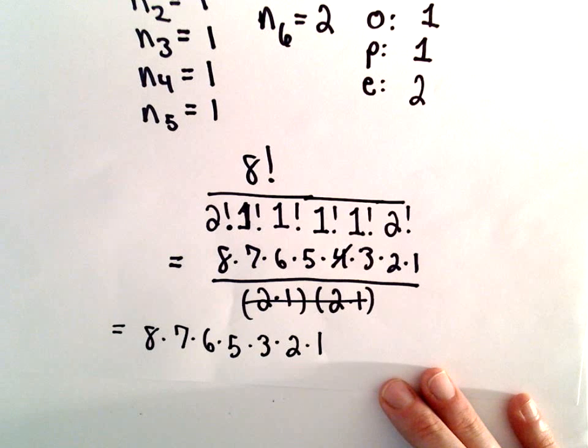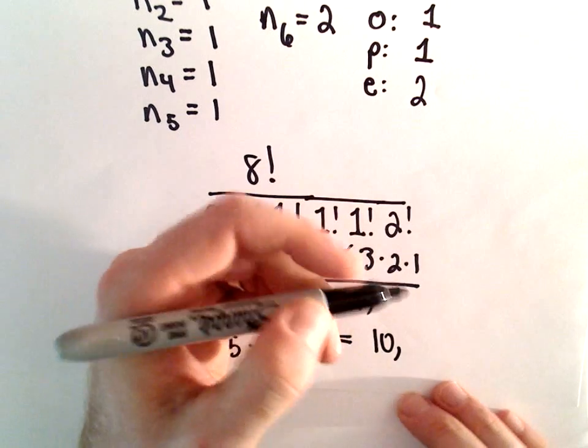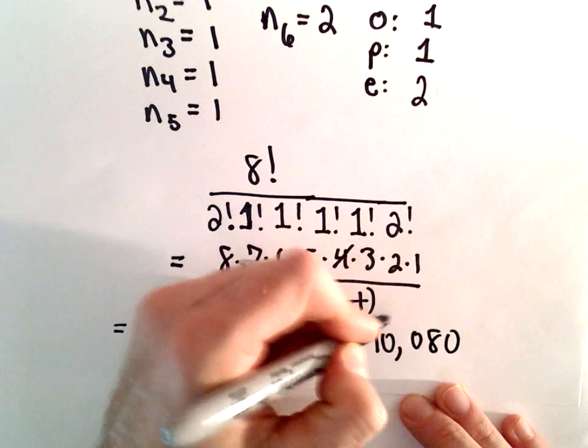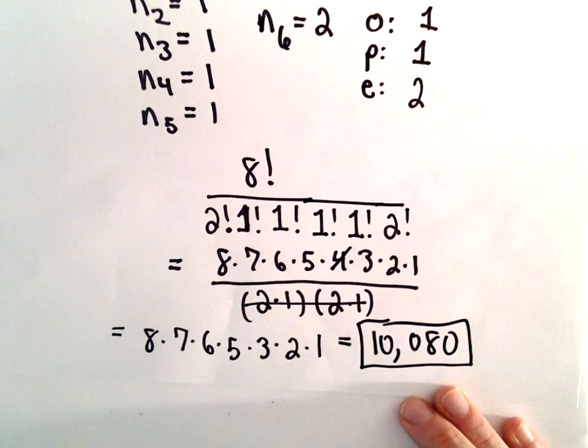So let's do that here. So 8 times 7 times 6 times 5 times 3 times 2 times 1. I'm getting 10,080 as the total number of ways.